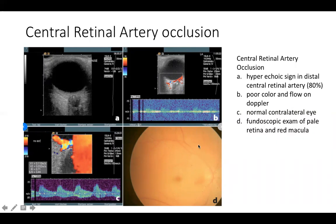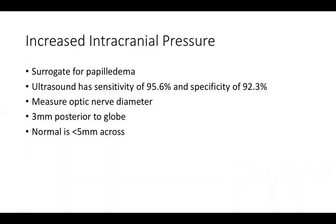The last indication we often use ultrasound for is to evaluate for increased intracranial pressure, and this can be used as a surrogate for papilledema. Ultrasound has been found to have sensitivity and specificity greater than 92-95% for this diagnosis. The key is to make sure you are measuring the optic nerve and not just a shadow. Remember to measure three millimeters posterior to the globe every time — normal is less than five millimeters, and anything larger is a sign of increased intracranial pressure.